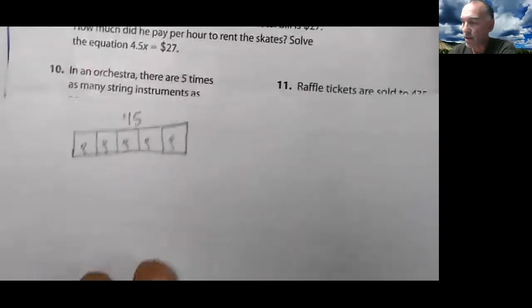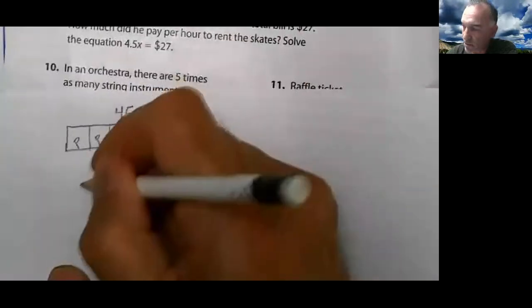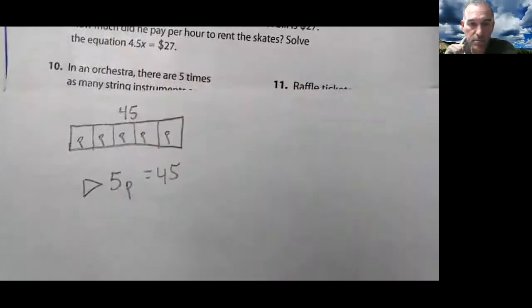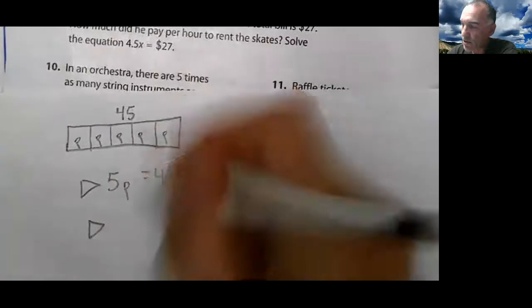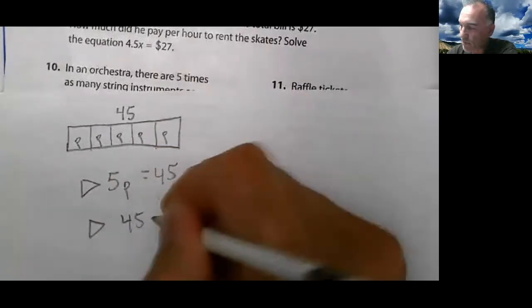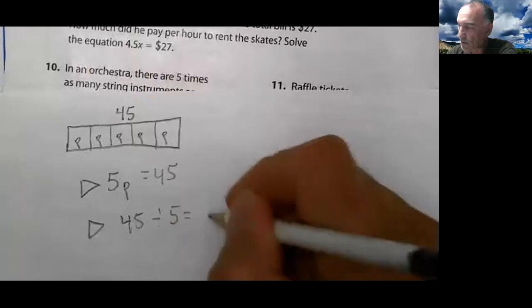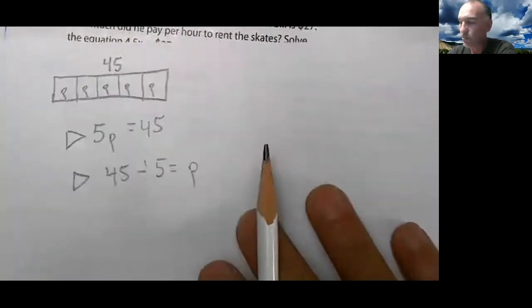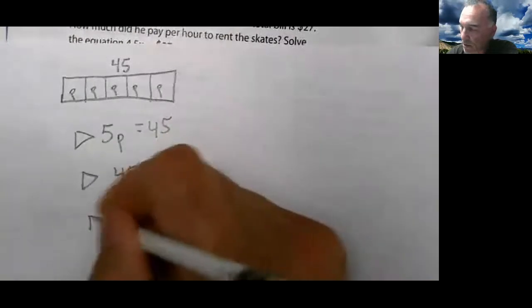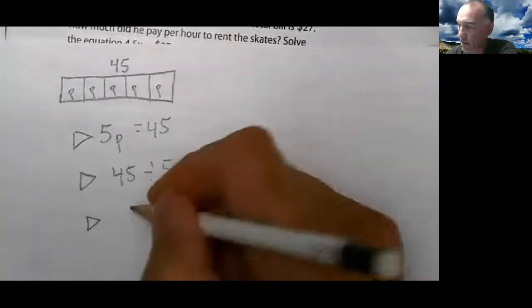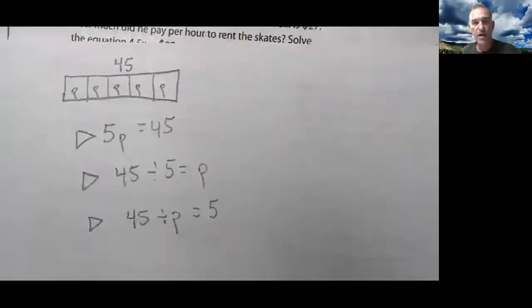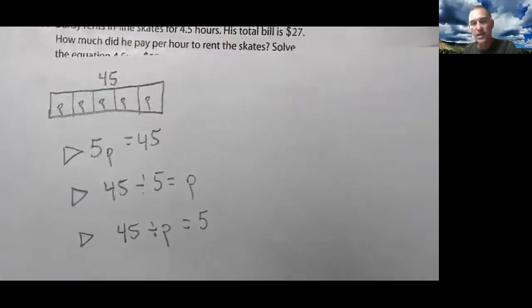So this could be written up three different ways. I could do 5p equals 45. There's one. I could do 45 divided by 5 equals p. Well, look at that one. Look how easy. 45 divided by 5. That's going to be 9. p equals 9. So there are 9 percussions. Or I could have done 45 divided by p equals 5. Three ways to write that one up.